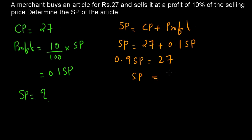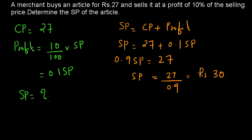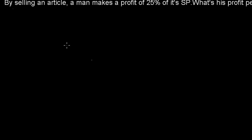From that, selling price equals 27 divided by 0.9, which equals 30. The key point is to read the question carefully — here the profit is not just 10%, but specifically 10% of the selling price. From that you can form the formula and easily find the selling price.